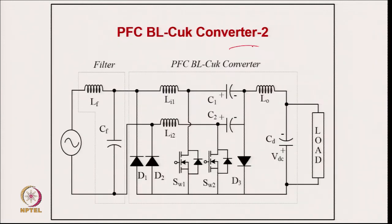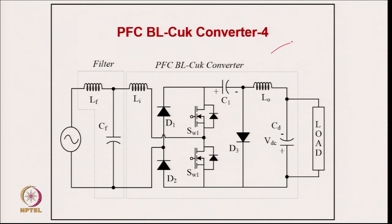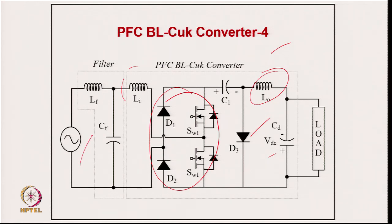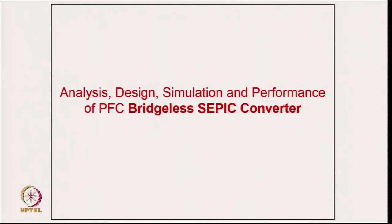Additional topologies of the PFC bridgeless CUK converter include several modified versions — second, third, fourth, and fifth topologies — where input/output inductors and diodes are shared between positive and negative half cycles, adding only the switching devices for each half cycle. Five topologies are presented for the bridgeless CUK converter with power factor correction.